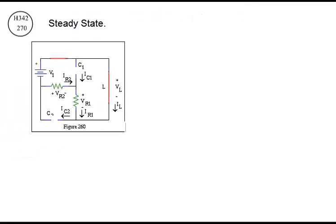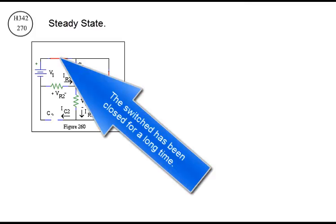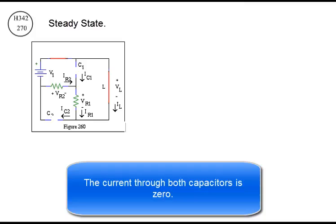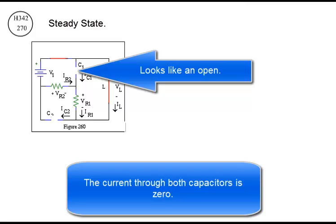This is the steady state condition. The switch has been closed for a long time. The current through both capacitors is zero. They both look like opens.